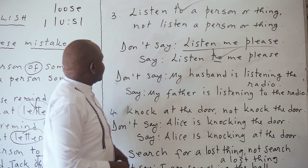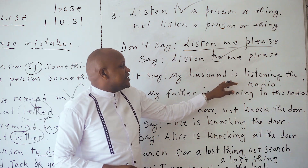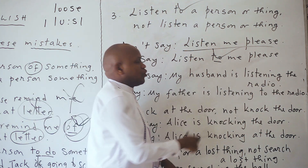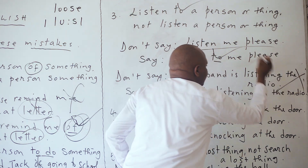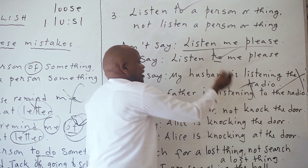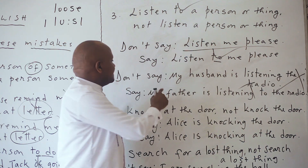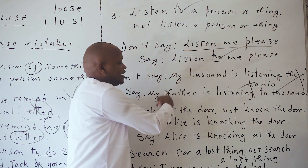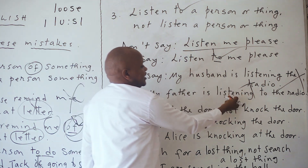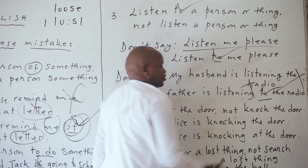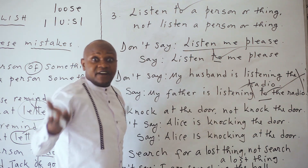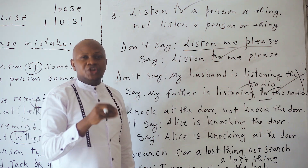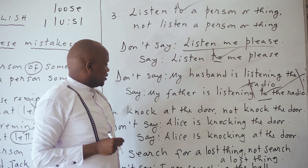Don't say 'my husband is listening the news' or 'my husband is listening the radio.' You will say 'my husband — or my father — is listening to the radio.' Listen to the radio. Always include 'to' when using the verb listen.